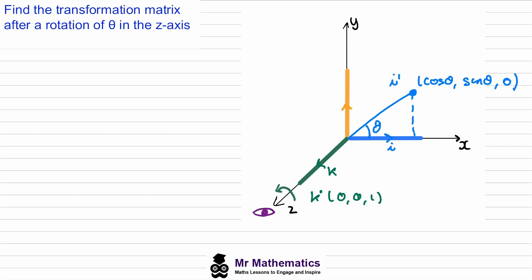When we rotate j, it's mapped to about this point. The x value will be negative — this will be the opposite length, so negative sine theta. The y value will be the adjacent length, so cos theta, and the z value is zero. So the image of j will have coordinates (negative sine theta, cos theta, 0).